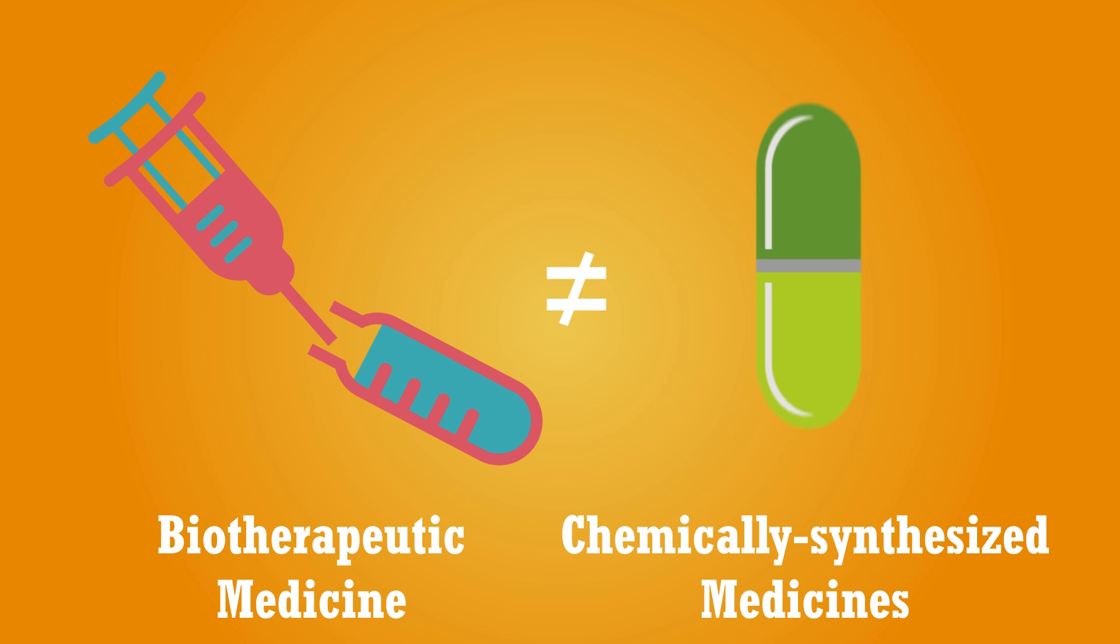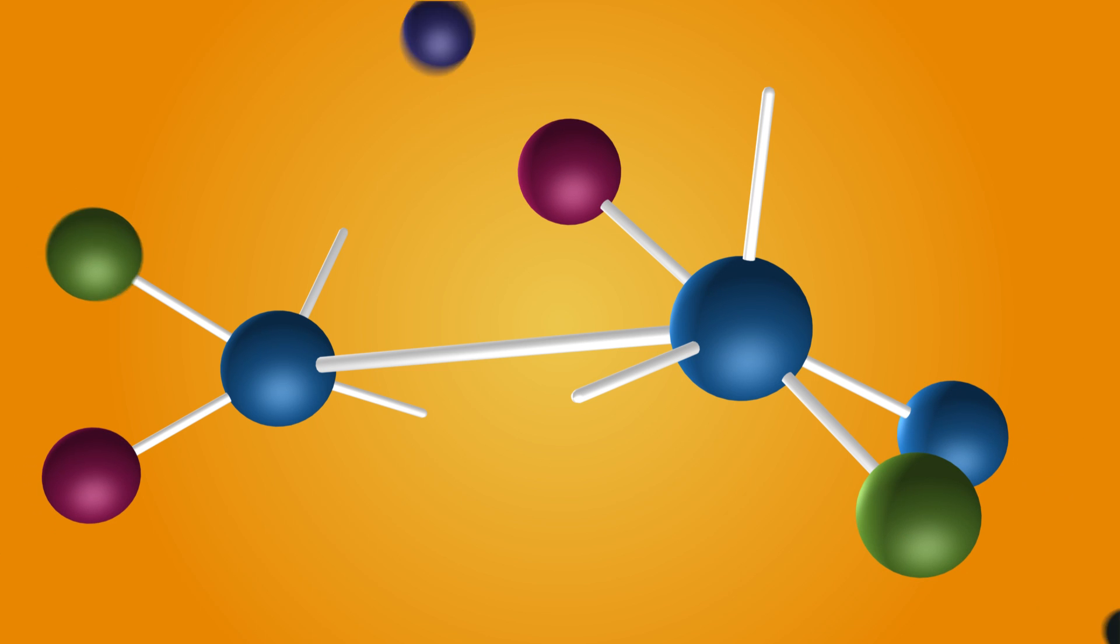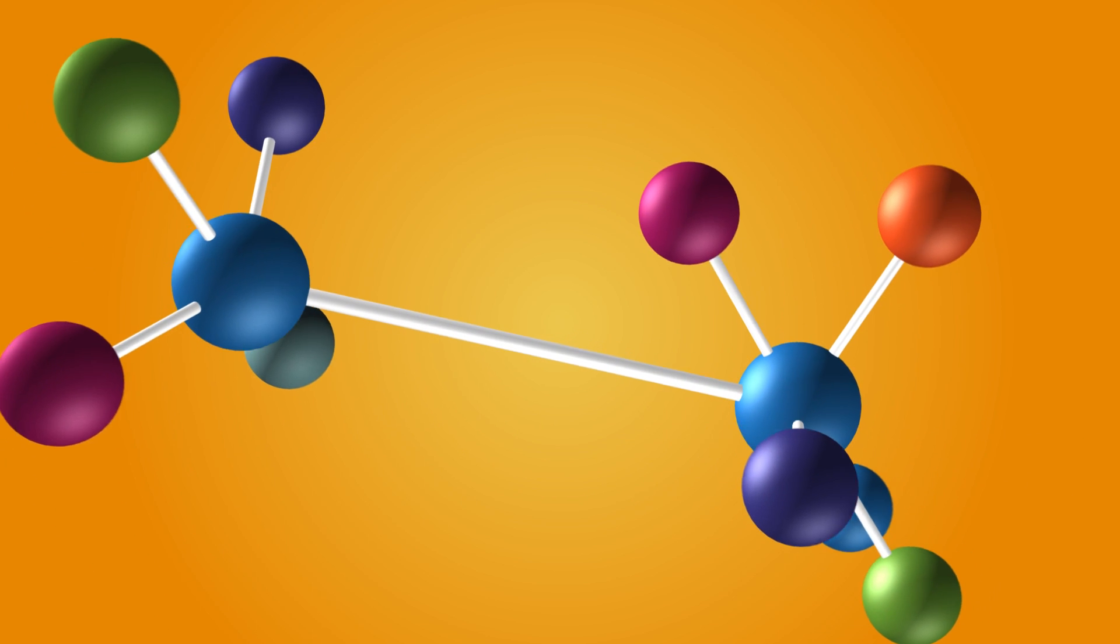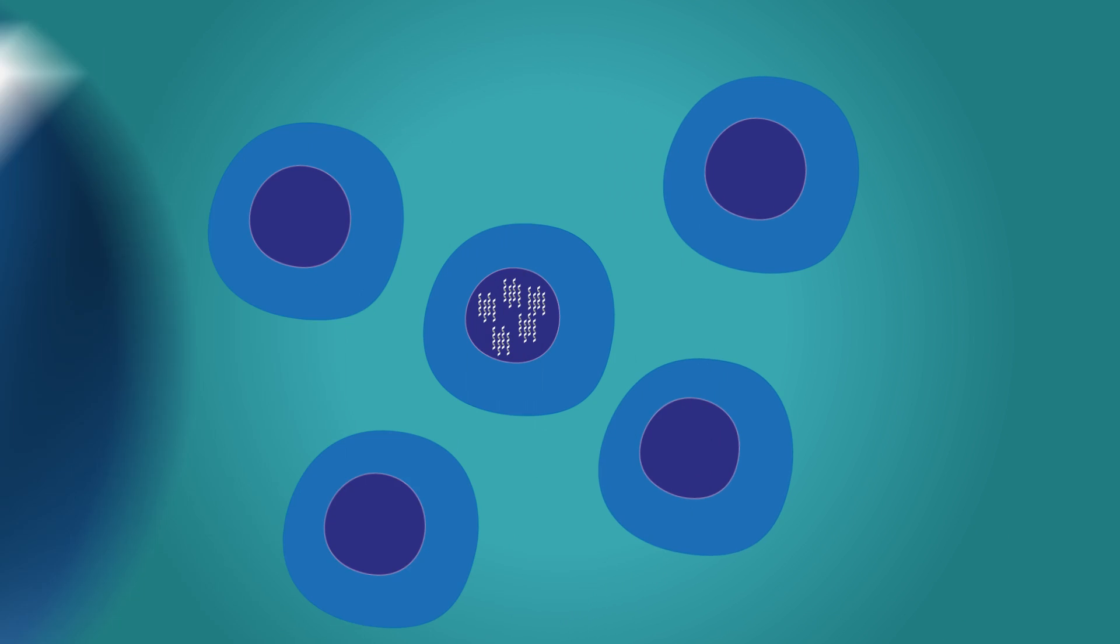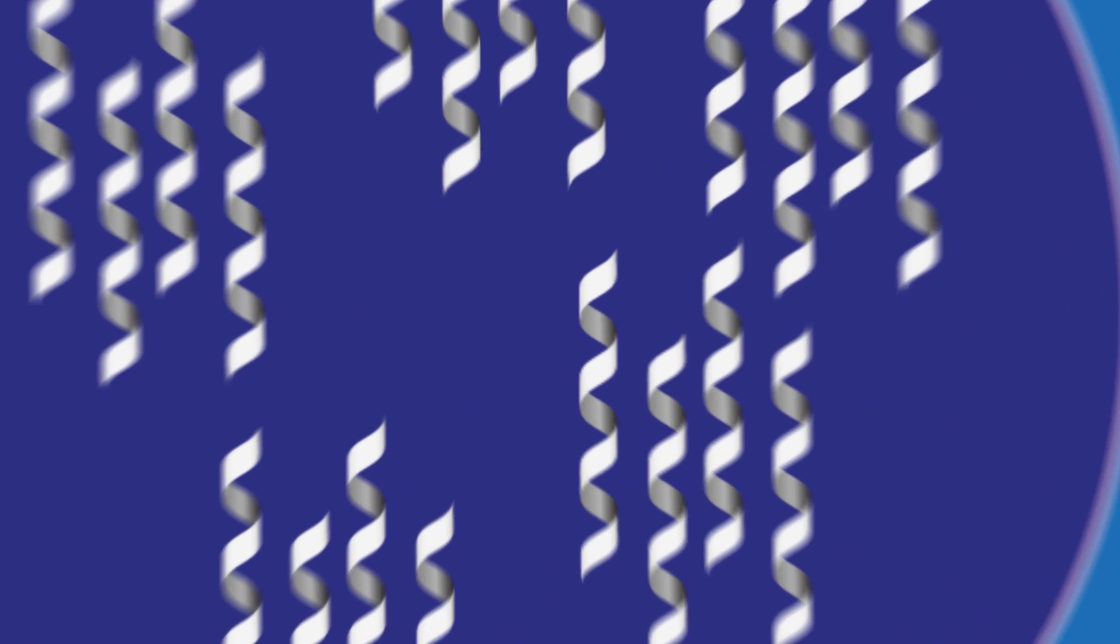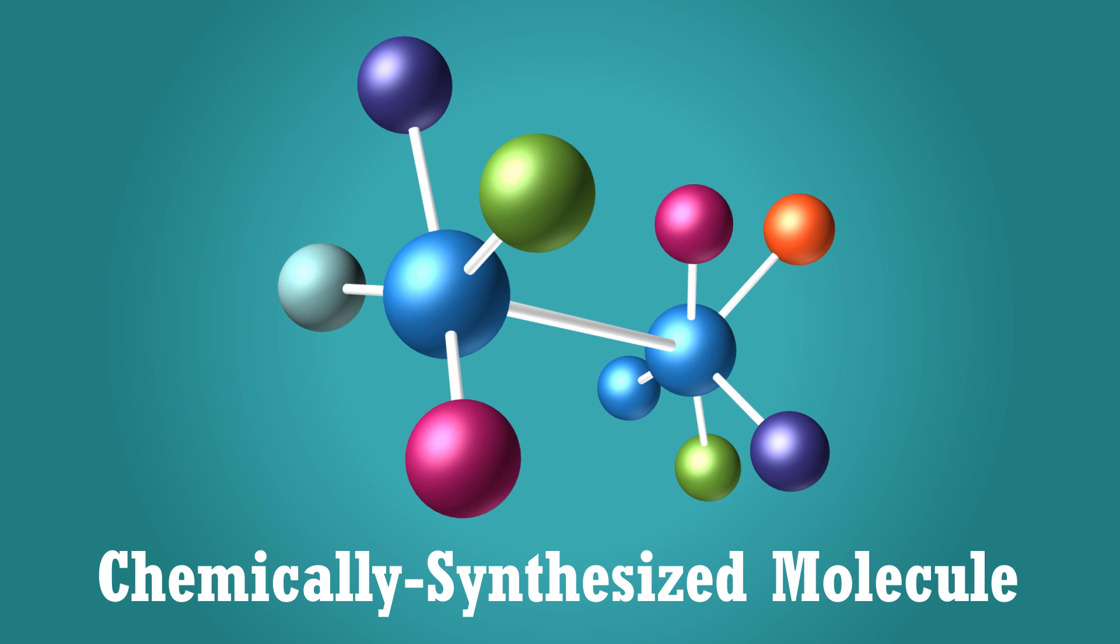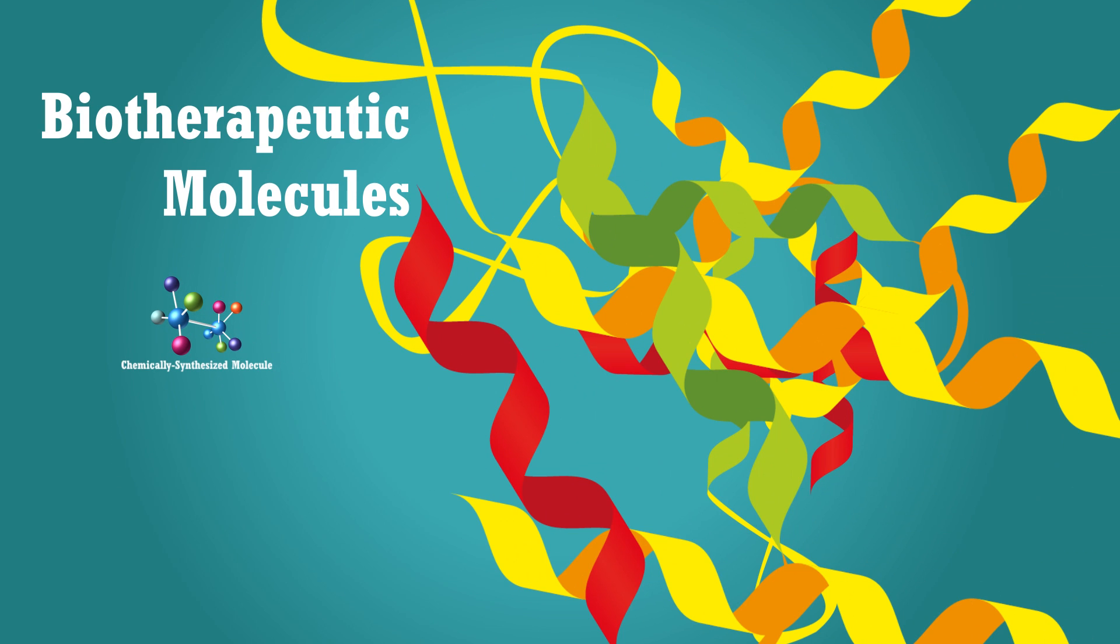Chemically synthesized medicines are normally made using a chemical or mechanical process, whereas biotherapeutic medicines are produced by living organisms. The molecules of chemically synthesized medicines tend to be small in comparison with biotherapeutic medicines, whose molecules are far larger and more complex.